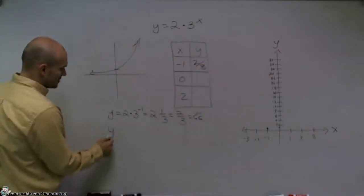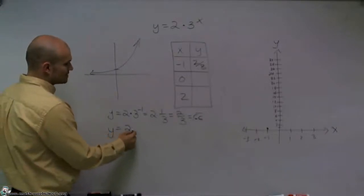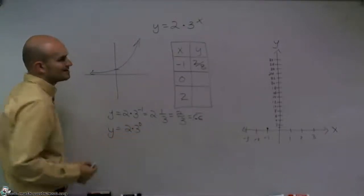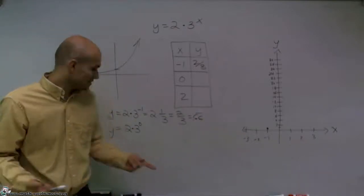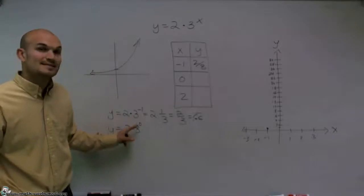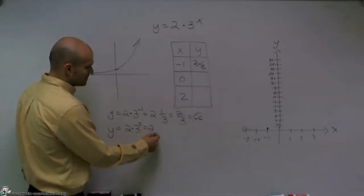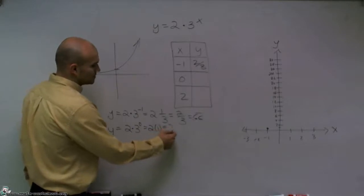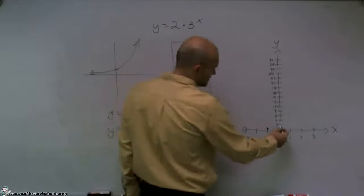Next one, I'm going to put 0. And 0 is always a great point to choose when you're trying to develop your table, because a lot of things happen with 0. We know that whenever you multiply a number times 0, it always goes to 0. And also any number raised to the 0 power equals 1. So therefore, I now have 2 times 1, which equals 2. So we can go and graph that point.